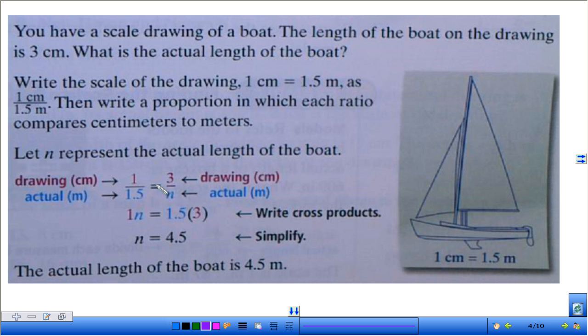So again, we're talking about corresponding. Whatever is corresponding, so in this case, centimeters on top, centimeters on top, meters on bottom, meters on bottom. So then we cross multiply, and they did that work down here for you, and they got 1 times N, which is just N, equals 1.5 times 3. And then they solved it down here. So the actual length of the boat is 4.5 meters.